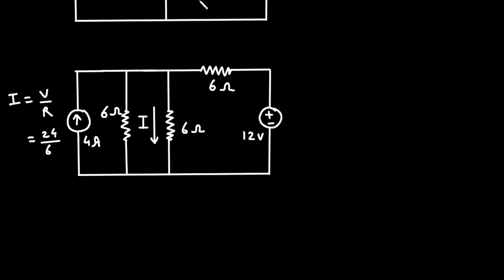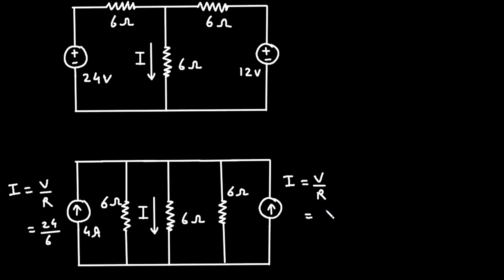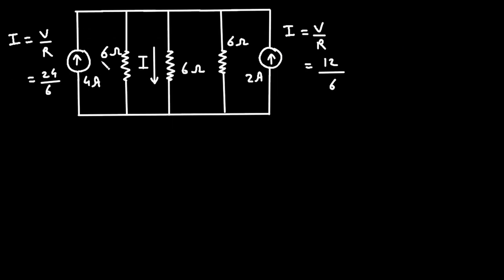Similarly, we have to convert this 6 ohm in series into parallel, so this is 6 ohm and this is 6 ohm. Again the positive sign is on the upside and negative is on the downside, so the current direction will be upward. Again using the formula I = V/R, here the value of voltage is 12 and the value of resistance is 6, so this will be 2 ampere.